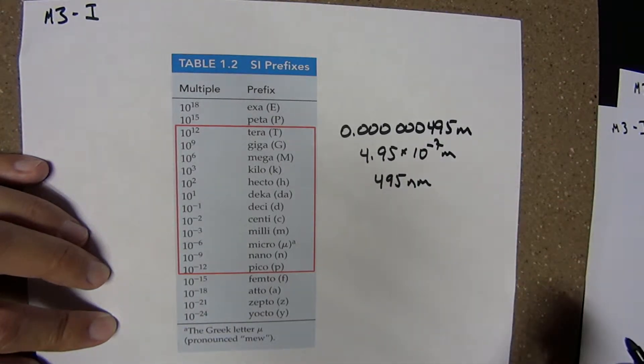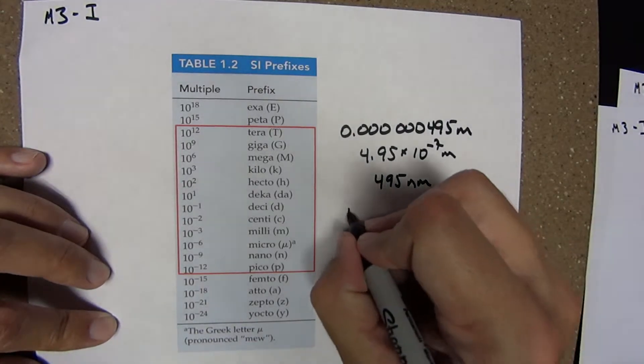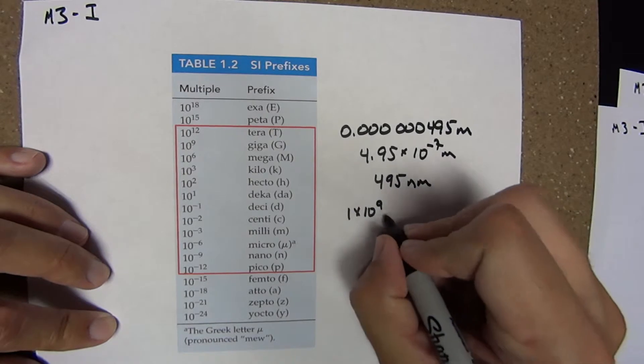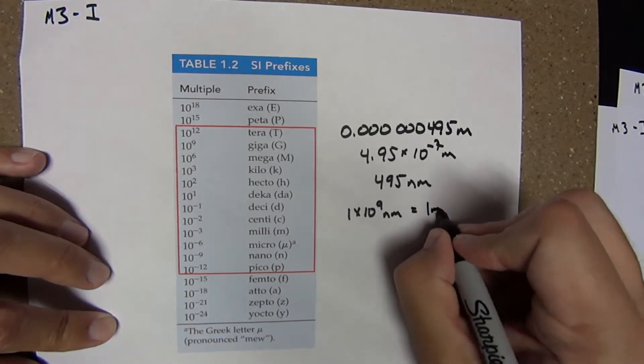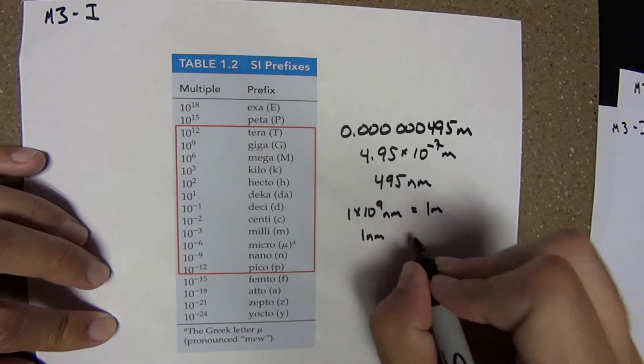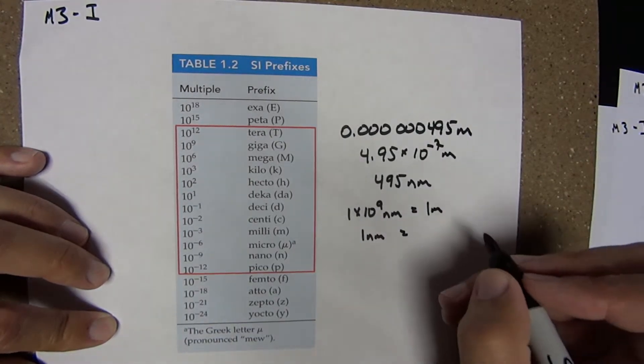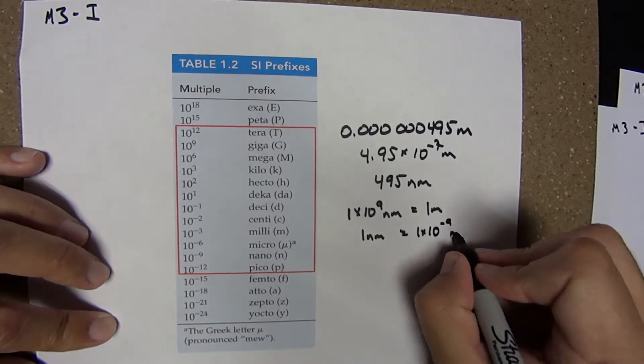The meter to nanometer conversion can be thought of in a couple different ways: either 1 × 10^9 nanometers (1 billion nanometers) equals 1 meter, or 1 nanometer equals 1 billionth of a meter (1 × 10^-9 meters).